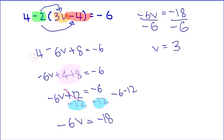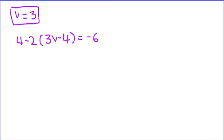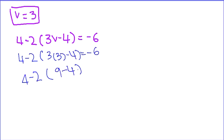Then you're going to have to do a check step. Remember v is equal to 3, so I'm going to substitute in my variable. 4 minus 2 bracket 9 minus 4. This is 9, and I'm just transferring everything.